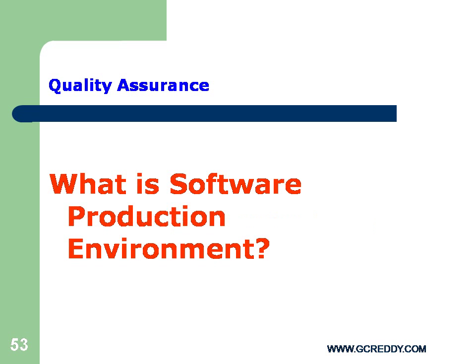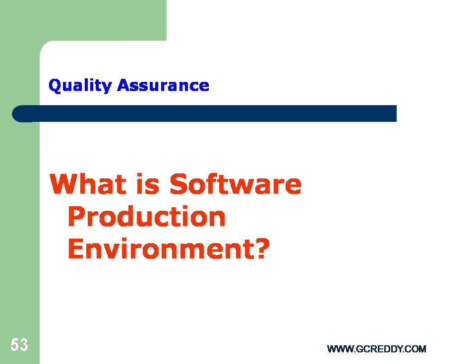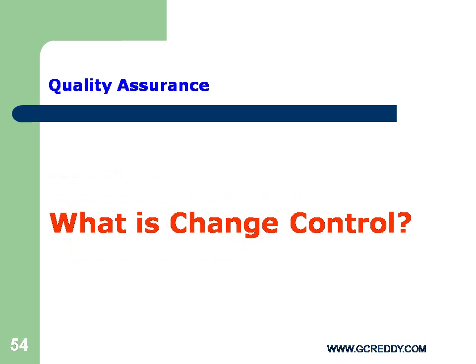What is Software Production Environment? A production environment is everything that it takes for the software to go live. What is Change Control? Proposed changes to baselines must have some level of review. The impact of proposed changes must be identified and understood. When appropriate, the approval of the CCB, key managers and project members must be obtained. Approved changes must be properly implemented, and all affected parties must be notified.